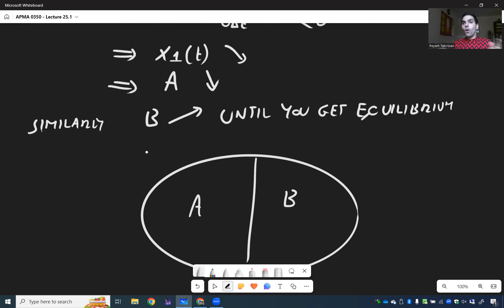So hopefully this makes a little bit more sense in terms of what is actually happening and what I like about this is it really motivates systems of differential equations quite nicely because you can see in the above example X1 and X2 are really coupled together because A reacts with B and B reacts with A.